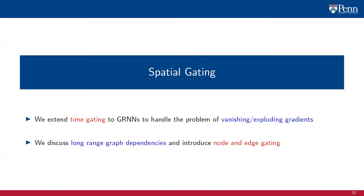We extend time gating to GRNNs to handle the problem of vanishing and exploding gradients. We discuss long-range graph dependencies and the issue of vanishing and exploding gradients in space. We then introduce spatial gating strategies, namely node and edge gating, to address it.